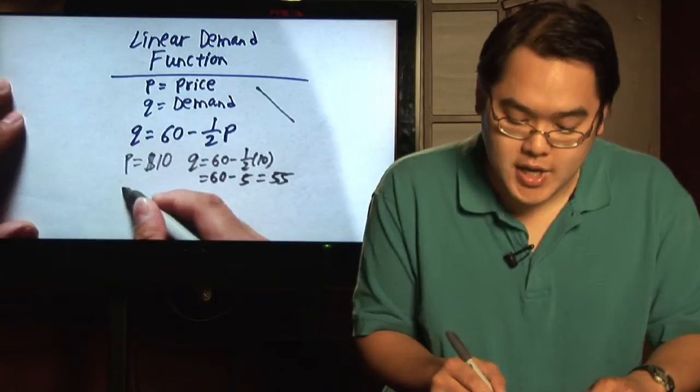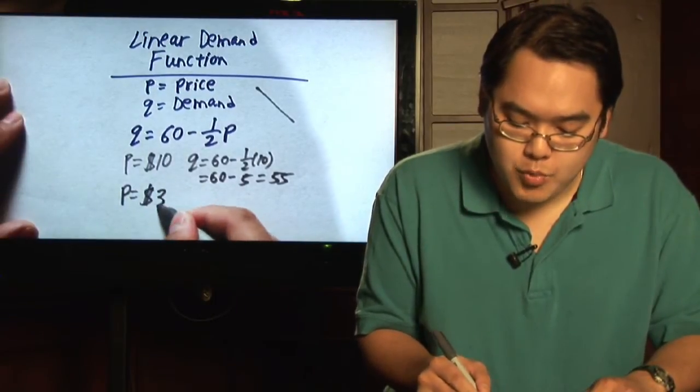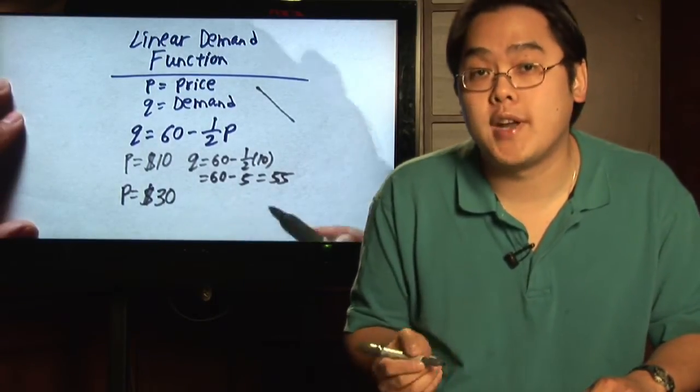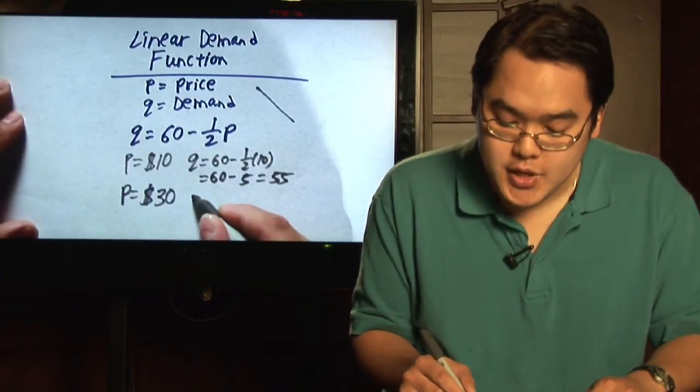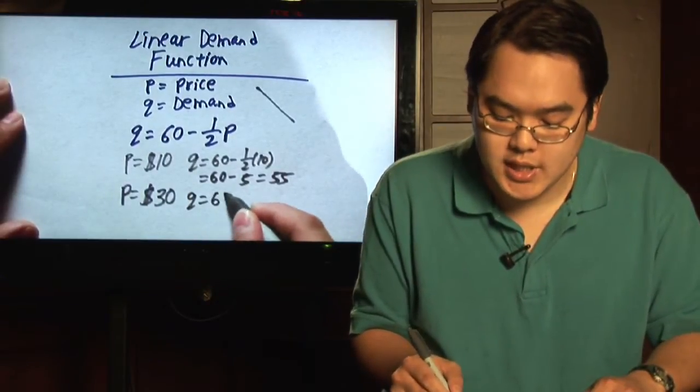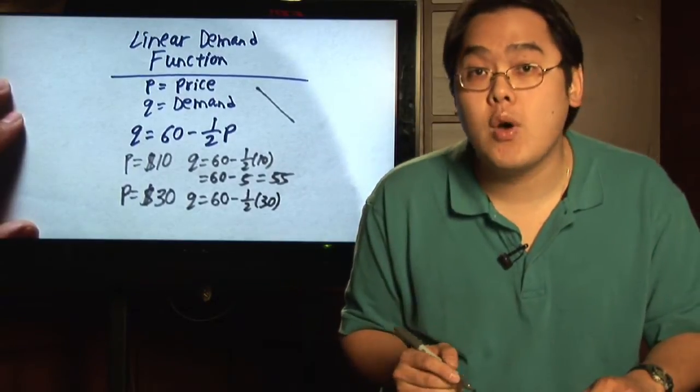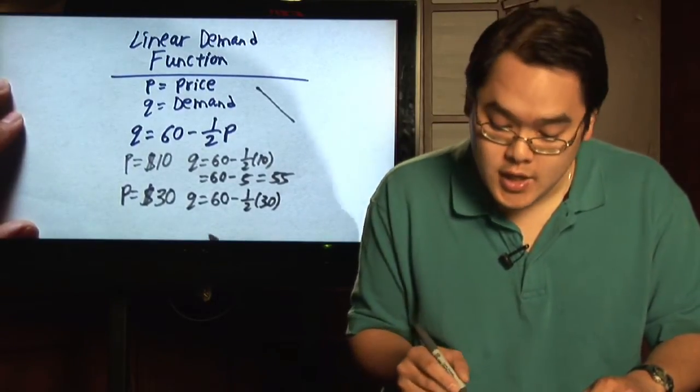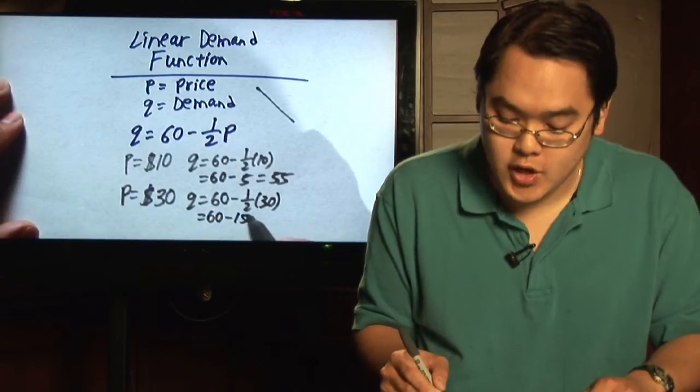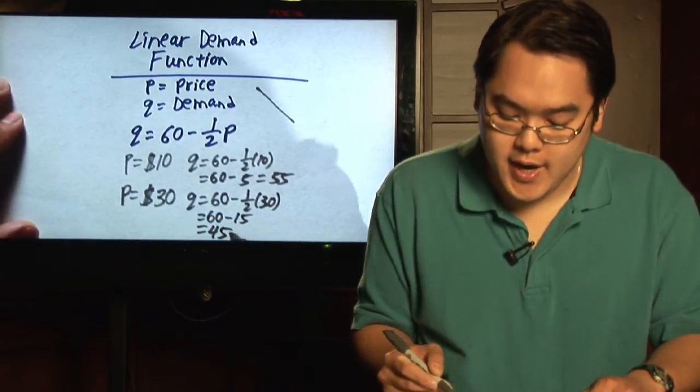Now, let's just say your price was $30. And then you want to find out what the demand of that happens to be. So you have Q equals to 60 minus one half of 30. And as you know, half of 30 is 15. So you have 60 minus 15, which is 45 items.